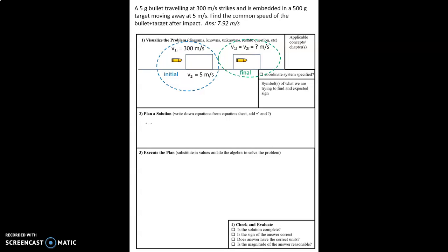Now we're going to fill in some of this information. We're working on chapter 8, conservation of momentum. Remember that momentum is a vector so we do need a coordinate system. Our coordinate system is going to be to the right being the positive x direction. What are we trying to find?